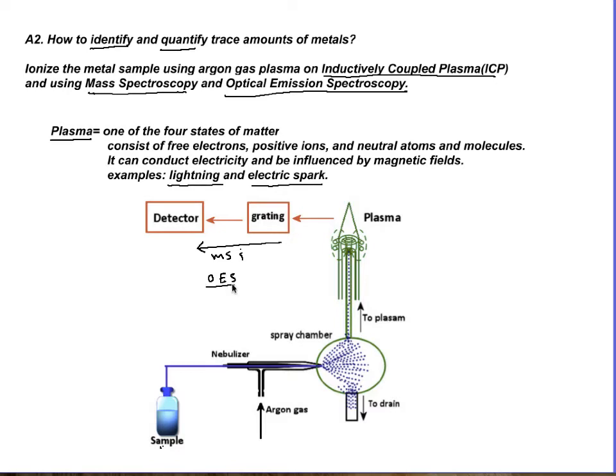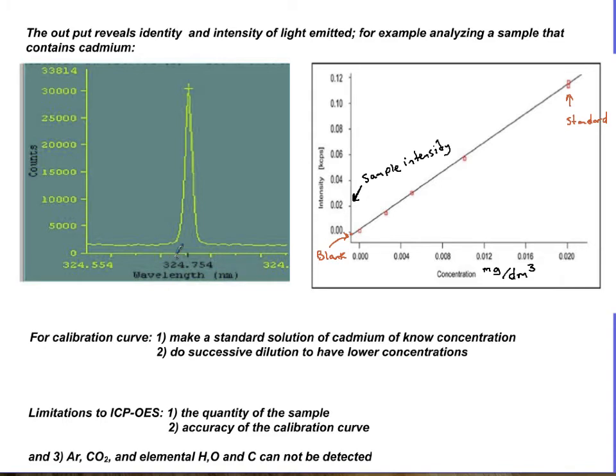Now what it produces is the following. Based on emission, it gives you a wavelength of the element that we are dealing with. For example, I have put a picture of cadmium and its wavelength comes to life. And then we can say your sample has cadmium.